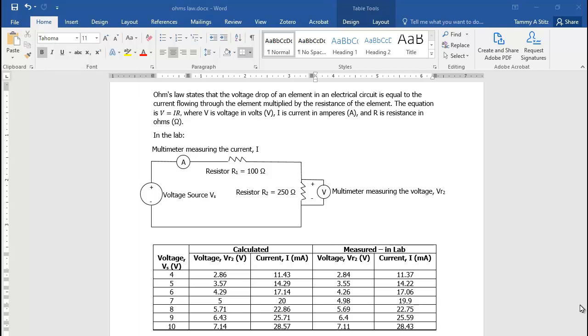In the lab, the positive terminal of the voltage source is connected to the multimeter measuring the current I. Then that ammeter is connected in series with a resistor of 100 ohms. Then that resistor is connected in series with resistor 2, which is 250 ohms. I'm going to put a multimeter measuring the voltage Vr2 in parallel with the resistor. Then I'm going to connect resistor 2 to the negative terminal of the voltage source.